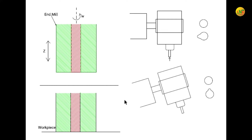If you look at the end mill, even though the spindle is rotating at a high RPM, the velocity of any point on the tool is v = r·ω. The periphery of the tool moves at a very high speed, but towards the center of the tool — within about ±0.5 mm of center — the radius is so small that the linear velocity there is very small.